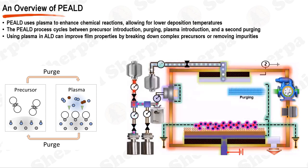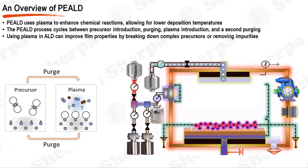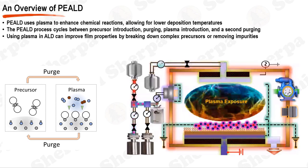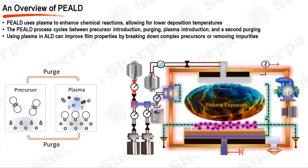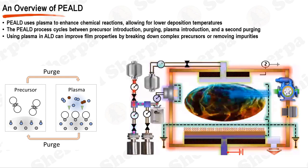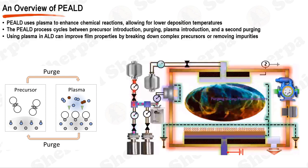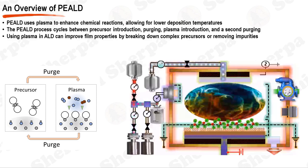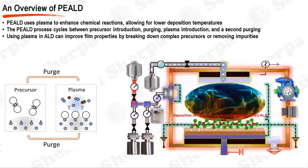Following the adsorption of the precursor, a purging process occurs, involving flushing the chamber with an inert gas such as nitrogen to remove any unreacted precursor and byproducts. This purge ensures that only the desired atoms remain on the substrate, contributing to the thin film's purity. After the purging stage, the substrate is exposed to plasma generated outside the ALD reactor chamber and then introduced into the chamber. This plasma exposure step differentiates PE-ALD from traditional ALD. The plasma, precursor, and carrier gas are introduced and exhausted in a cyclic manner, controlled by an ALD valve, repeating layer by layer until the desired film thickness is achieved.